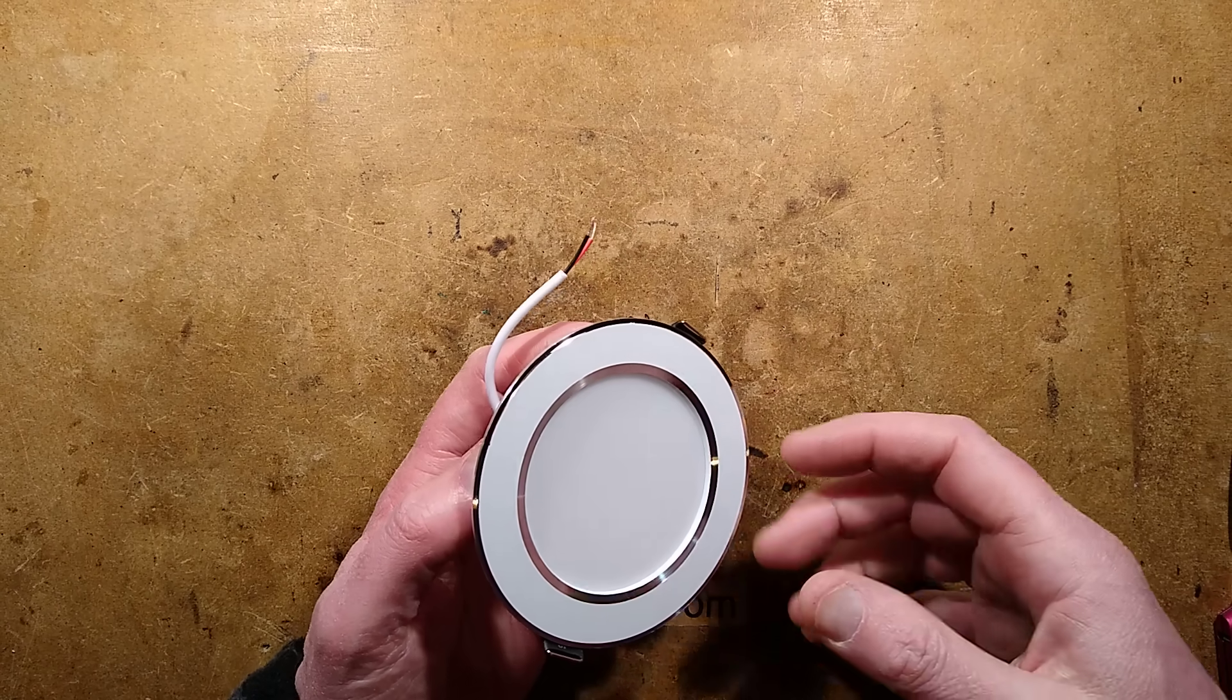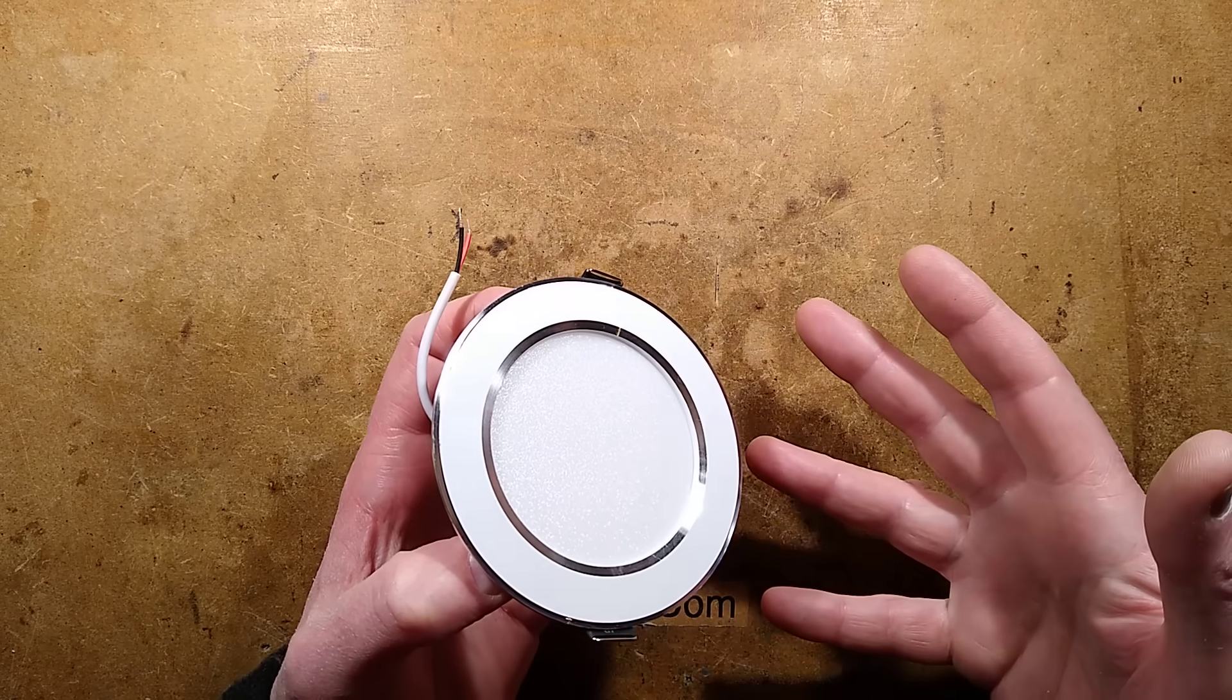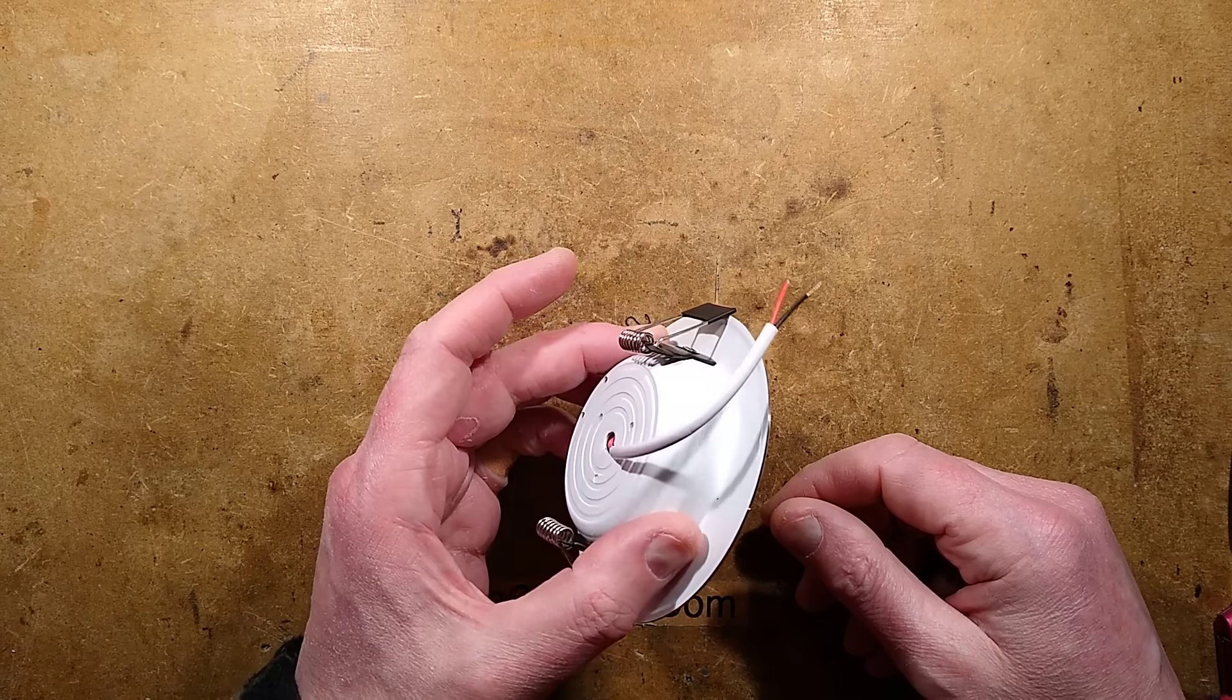A downlight, a 12 watt downlight, shipped from China for approximately $1 including shipping. You're thinking, how low can they go?